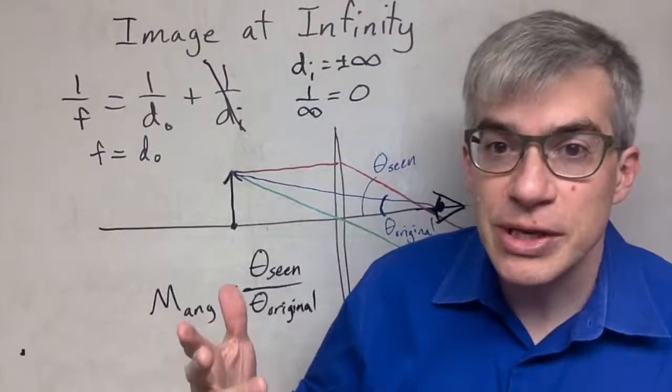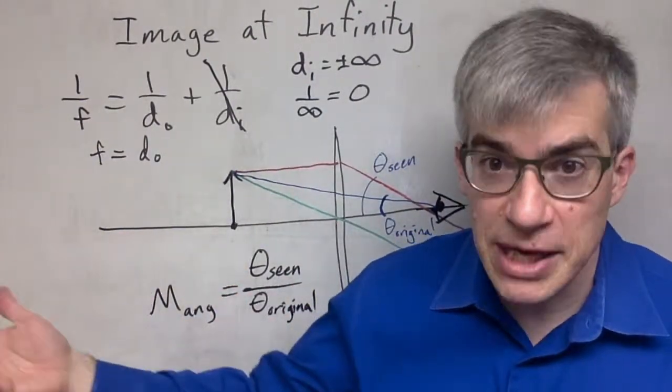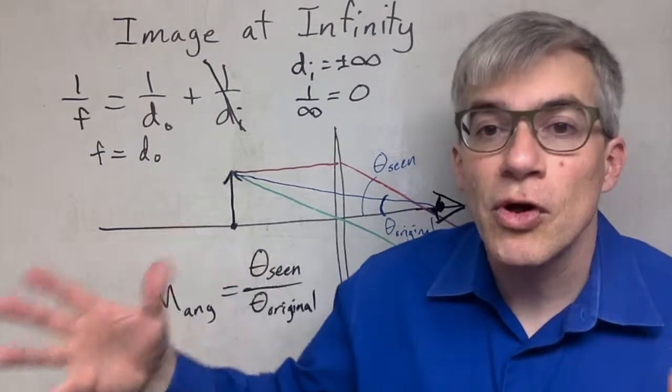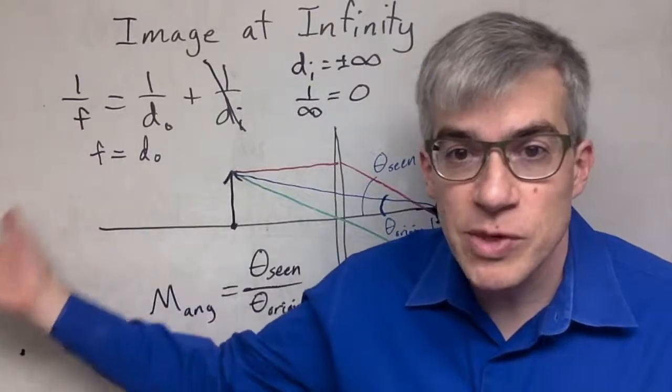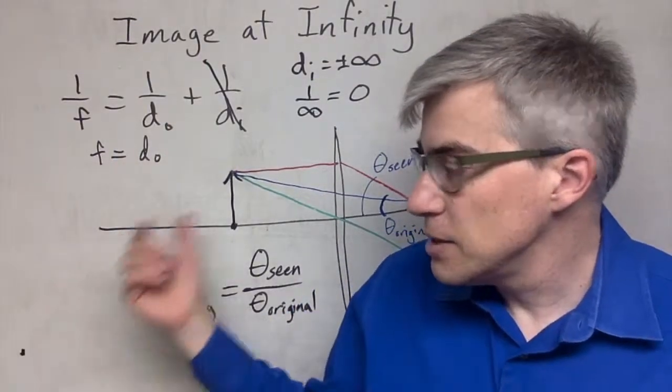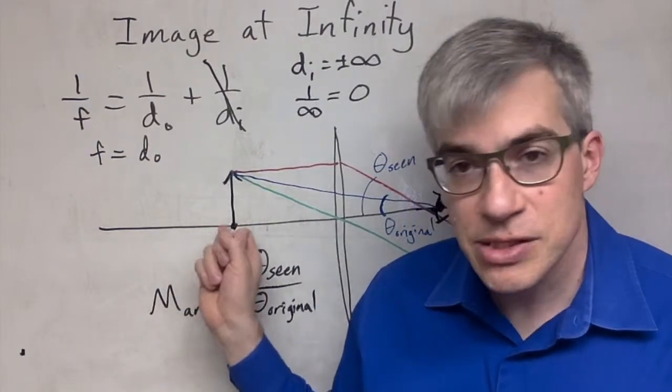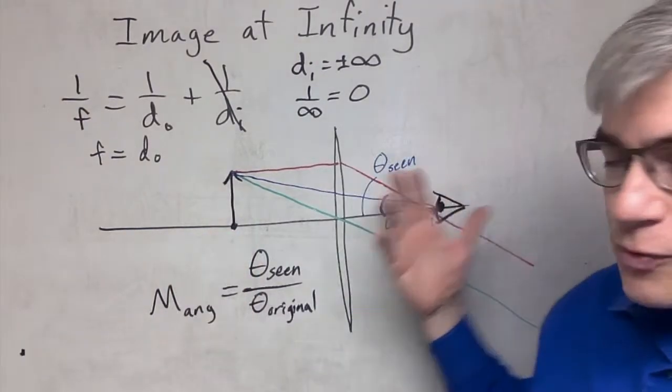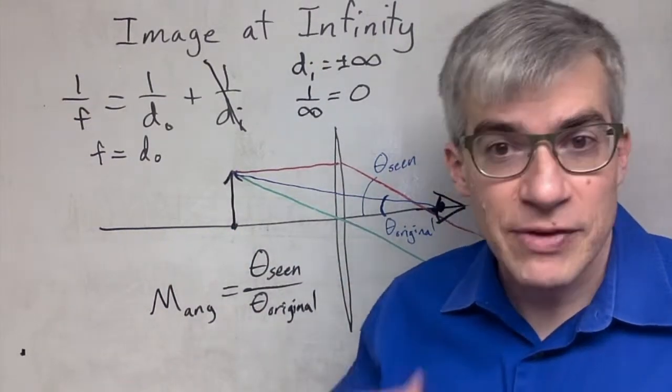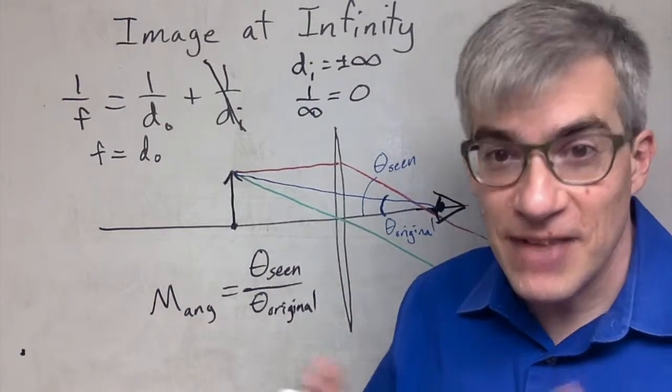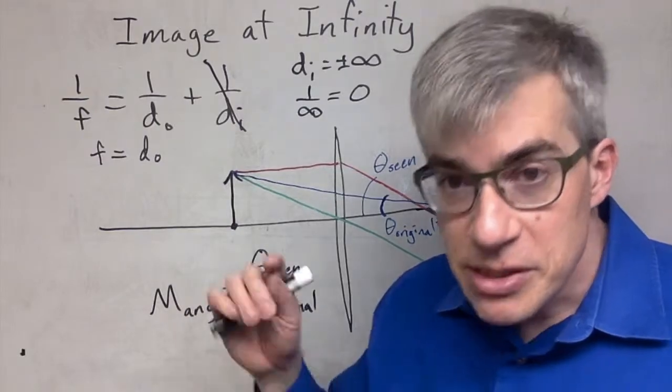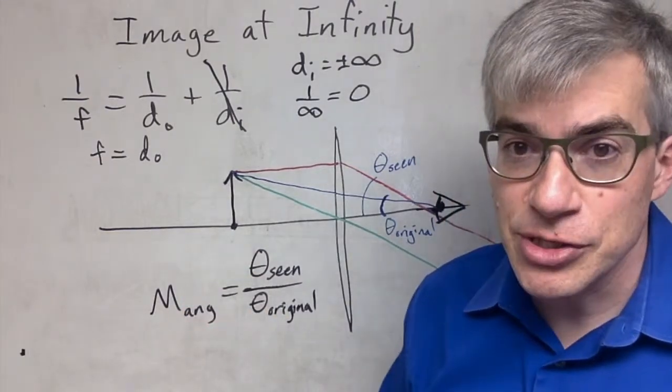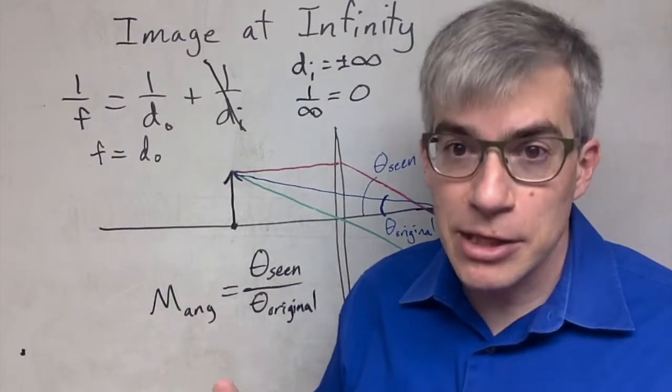This magnification can multiply other magnifications. Your overall magnification will be angular. So if you have two lenses, and the first one did a magnification of negative 2, and then the second lens had this at its focal point, your final image is infinity. You have an angular magnification of, say, 5, and if the other was negative 2, then you get negative 10. So you can still multiply the magnifications. Your final answer will be angular magnification.